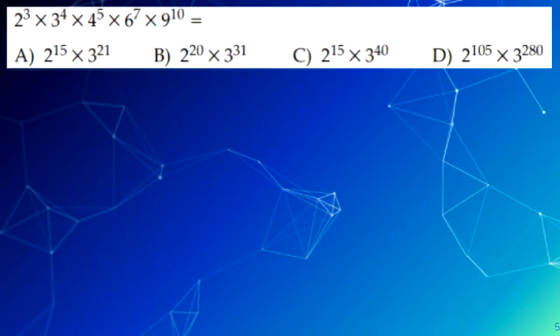The next question is 2 to the power of 3, times 3 to the power of 4, times 4 to the power of 5, times 6 to the power of 7, times 9 to the power of 10. Because every question has a base number of 2 and 3, we have to simplify all of these numbers to 2's and 3's.